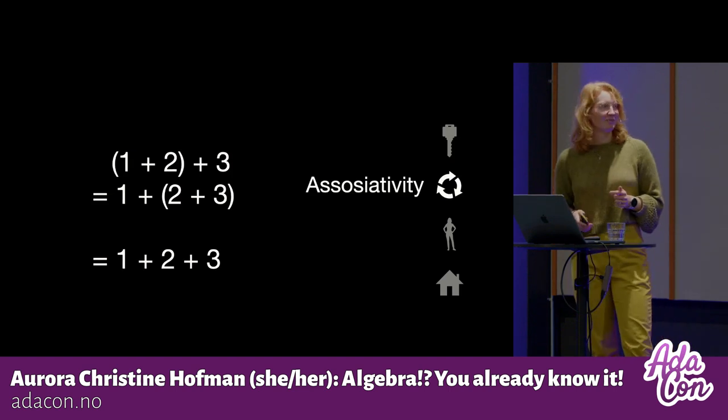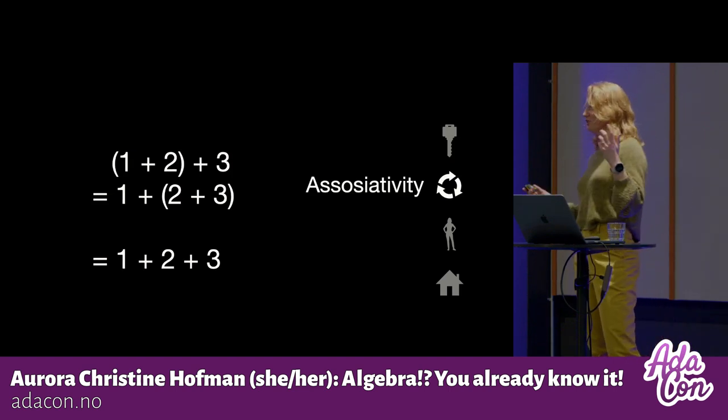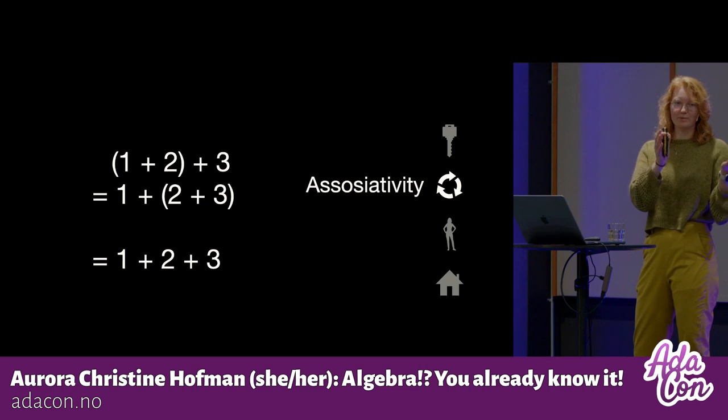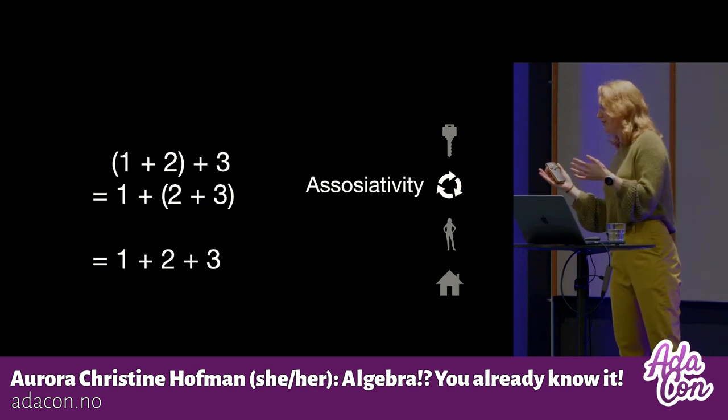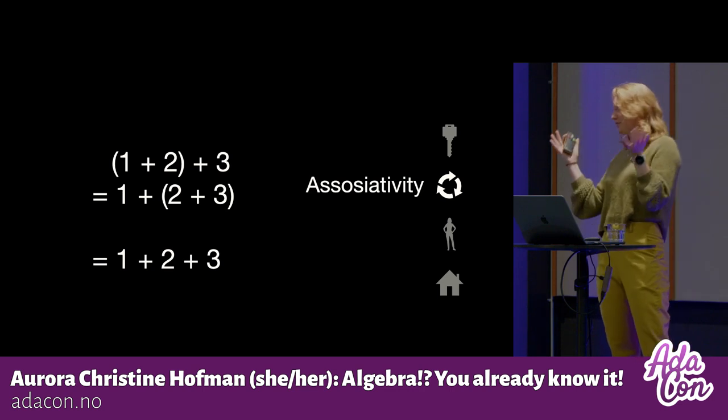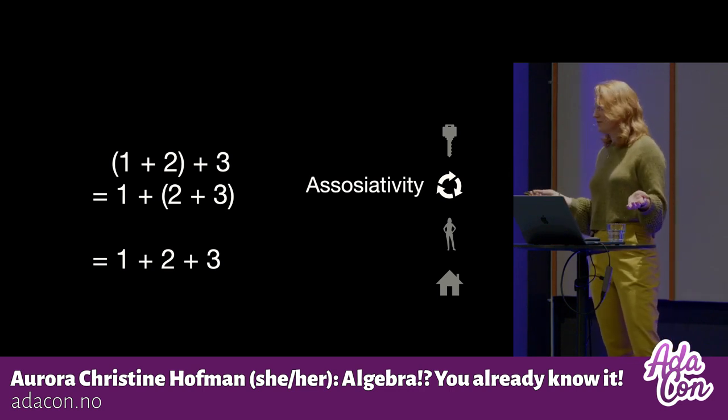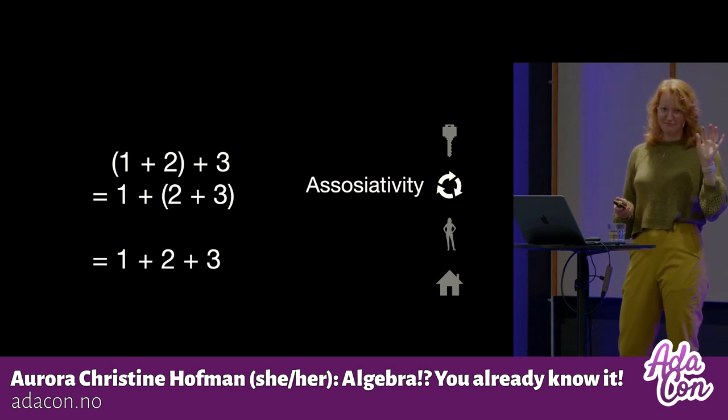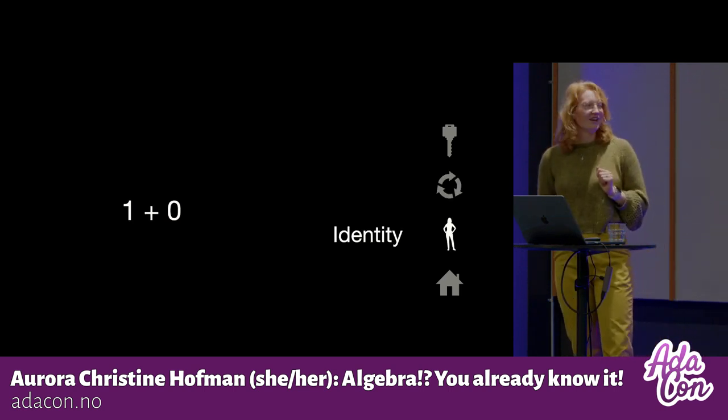Okay. Associativity, the second rule. Associativity basically means that you can put brackets wherever you want. So if I can take 1 plus 2 and then add 3, and that's the same as taking 1 plus 2 plus 3, then I have associativity. And you know that you have it if you can write an expression without brackets. Then you're good.